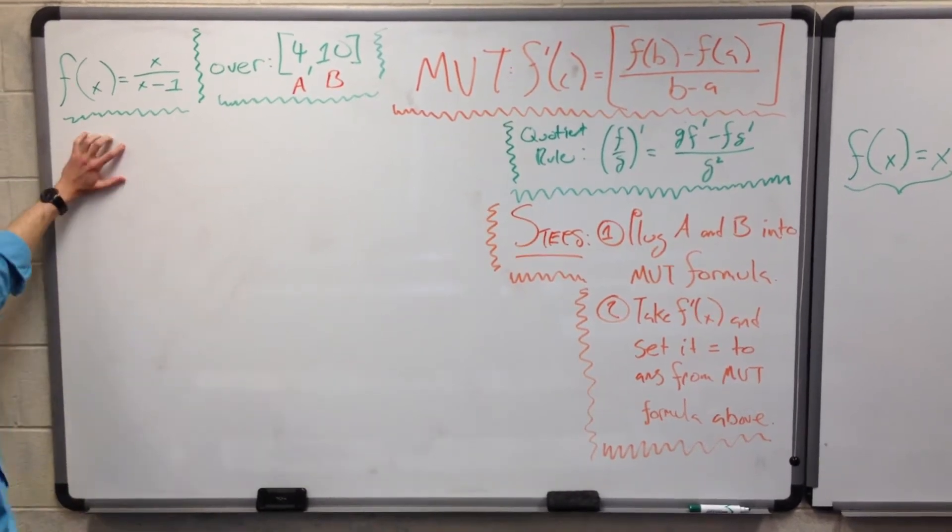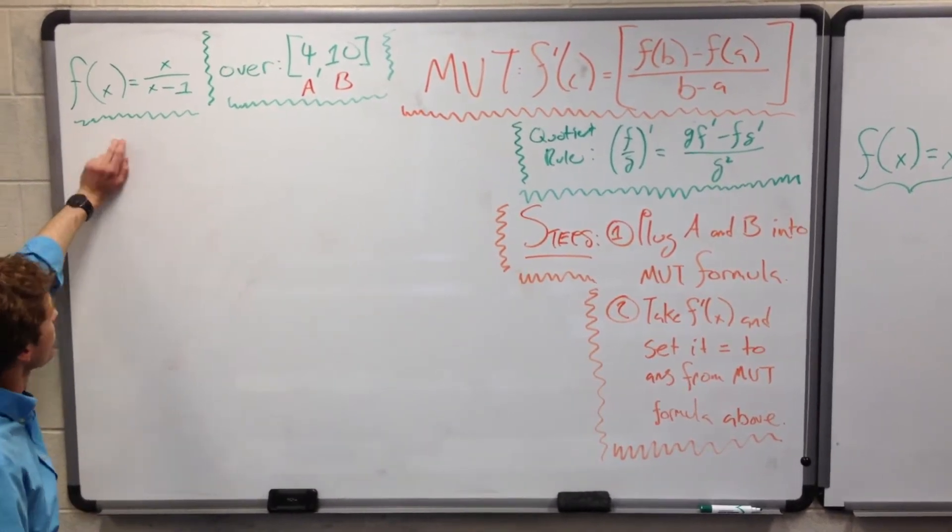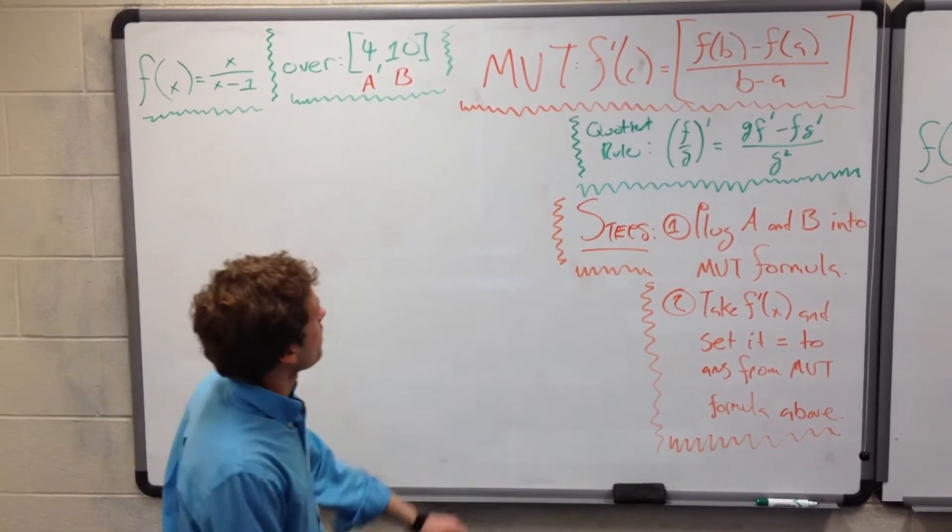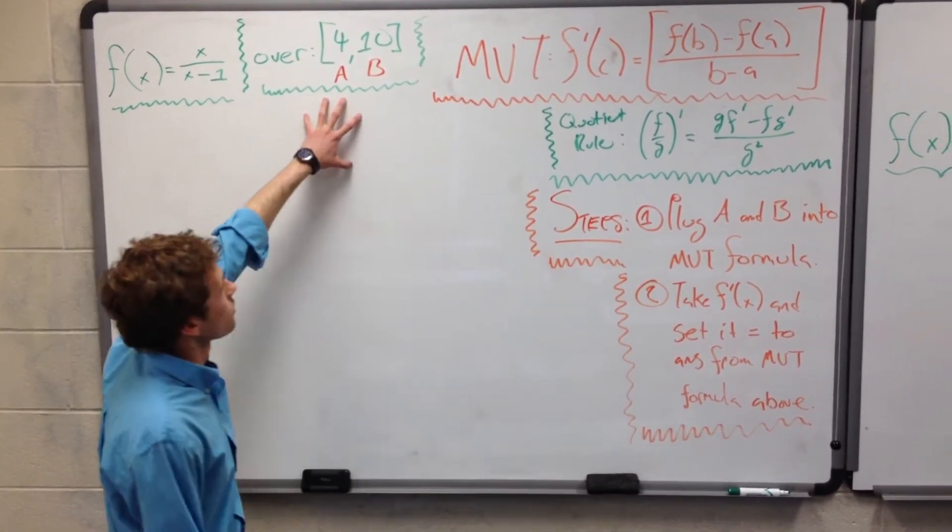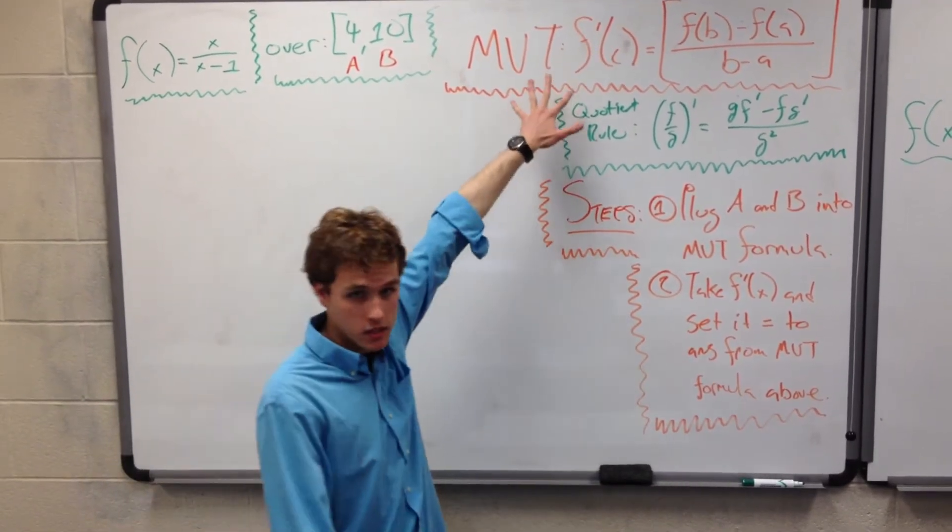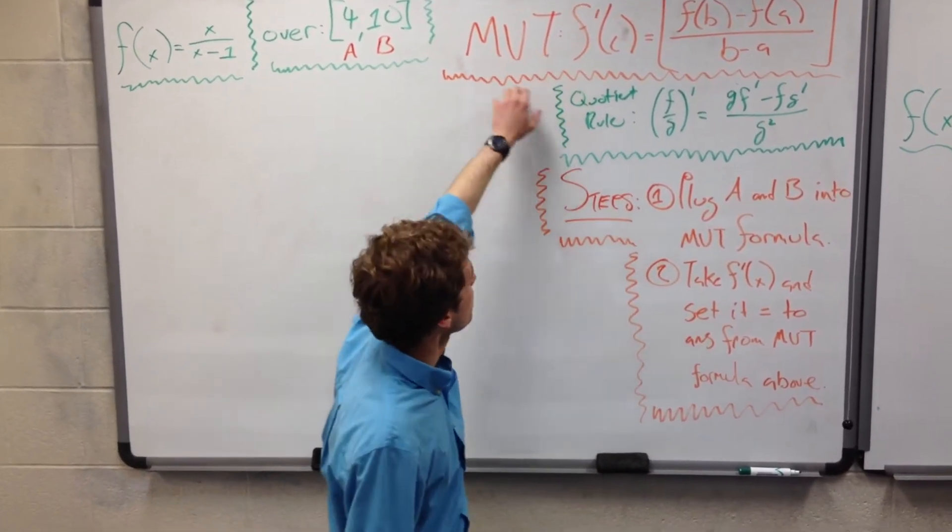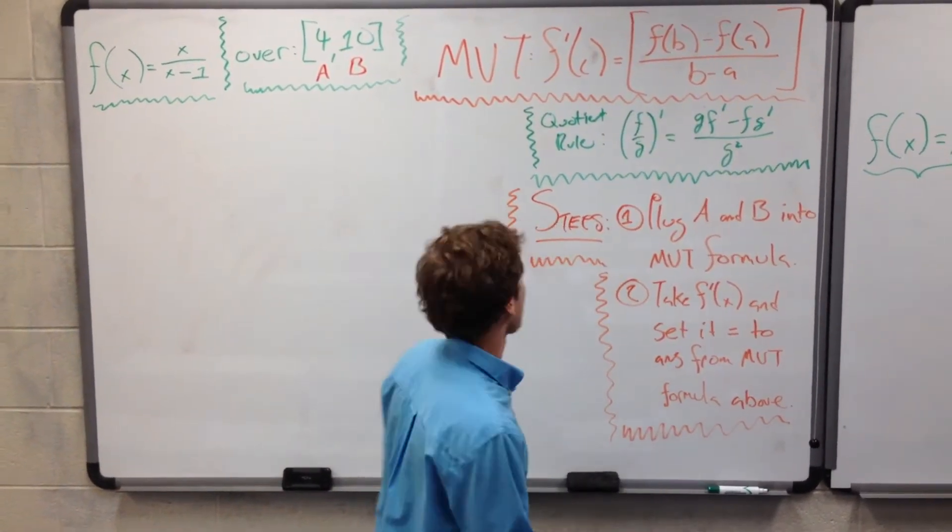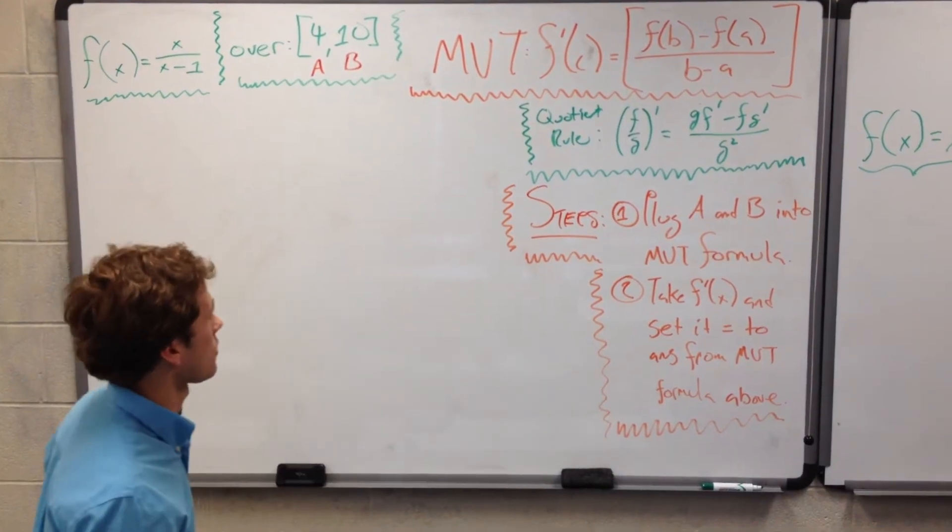Our problem is the initial function we're given is f of x equals x over x minus 1. We're doing this over the interval 4, 10, so this is our a and our b in the mean value theorem function, which is f of b minus f of a over b minus a, with these being the a and b that I just talked about.